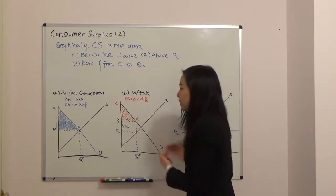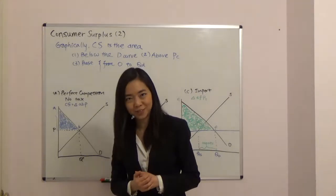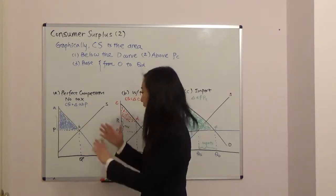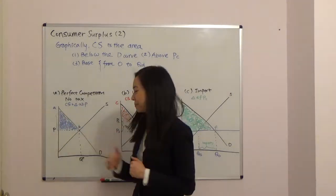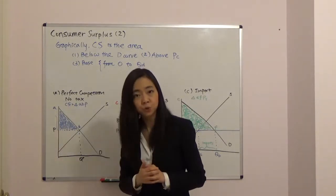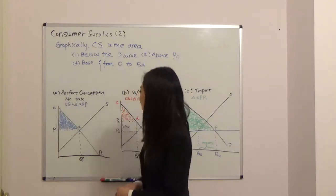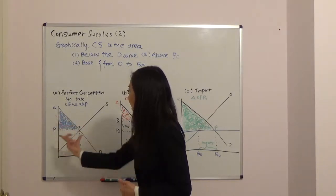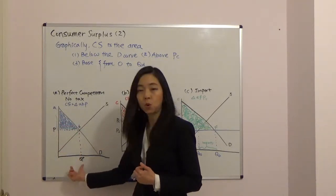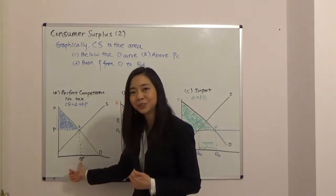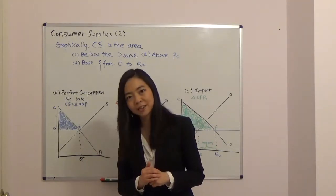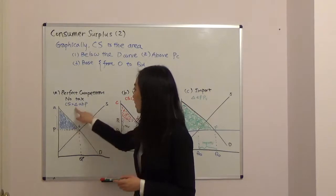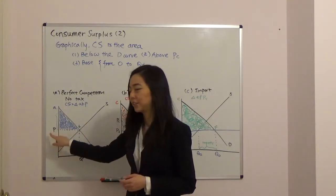We have three scenarios, and the first one is perfect competition without tax. So suppose we have perfect competition — this is your demand curve, that's your supply curve, and at the intersection you find equilibrium price. Without tax, the price paid by the consumer will be equal to the price received by the seller. The area of consumer surplus is below the demand curve, above the price, and the base of the triangle is from zero to Q star. The area of a triangle is one half times base times height, so consumer surplus is triangle A, B, P. That's the simplest case.